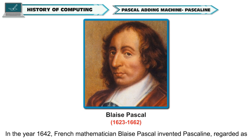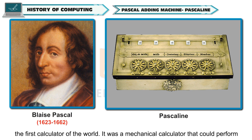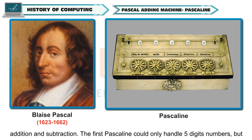In the year 1642, French mathematician Blaise Pascal invented Pascaline, regarded as the first calculator of the world. It was a mechanical calculator that could perform addition and subtraction.